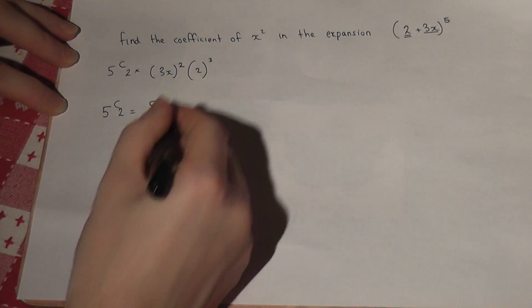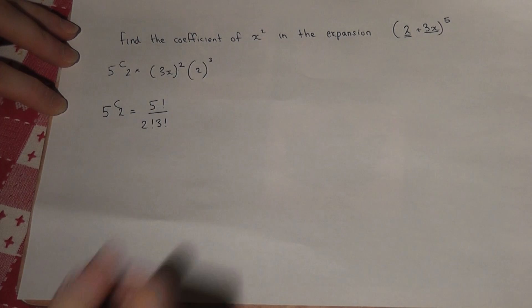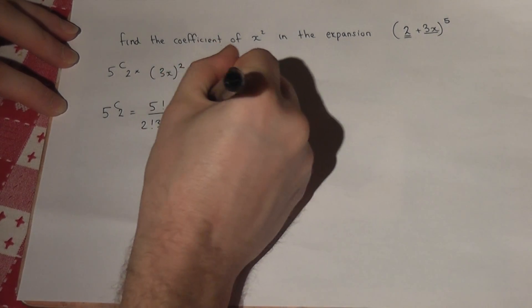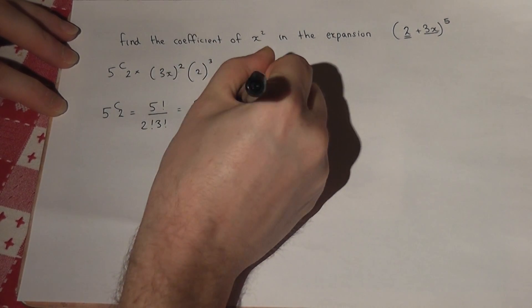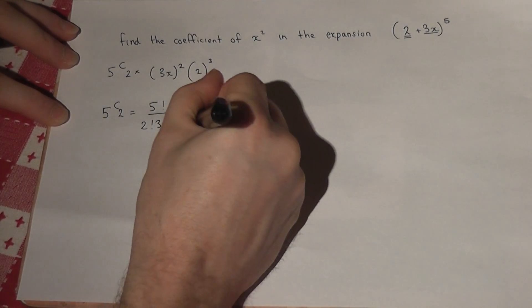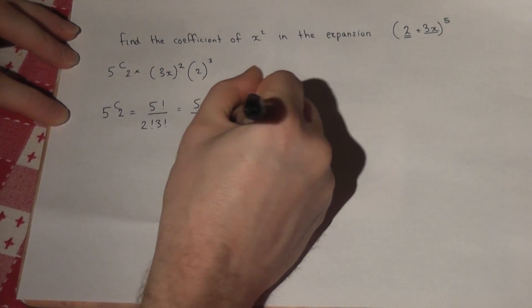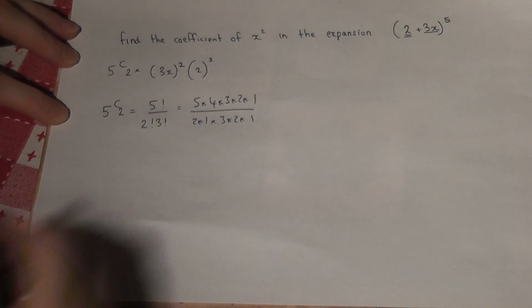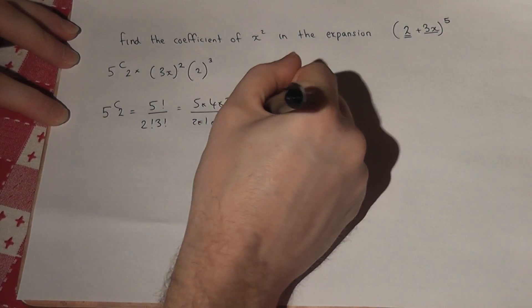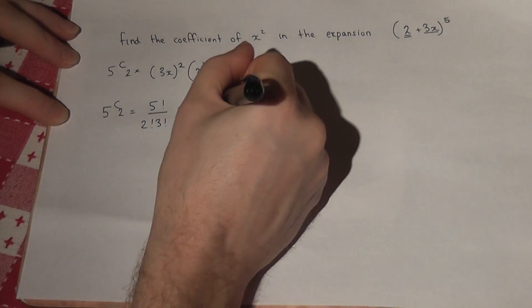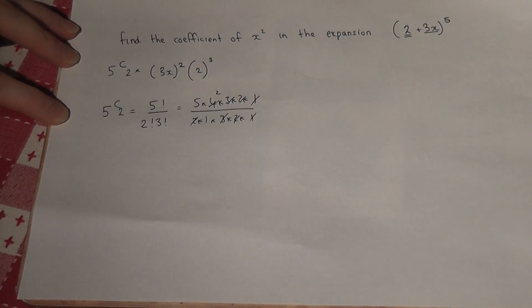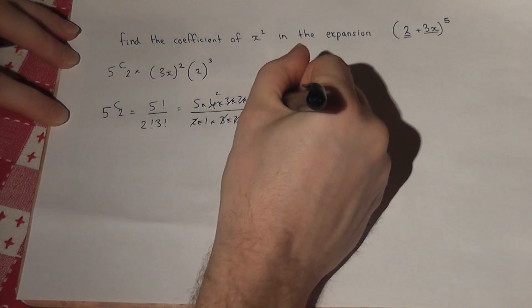The 2 and the 3 come from there, which therefore equals 5 times 4 times 3 times 2 times 1, over 2 times 1 times 3 times 2 times 1. The 3's cancel out. The 2 and the 4 cancel out like so. 5 times 2 is 10.